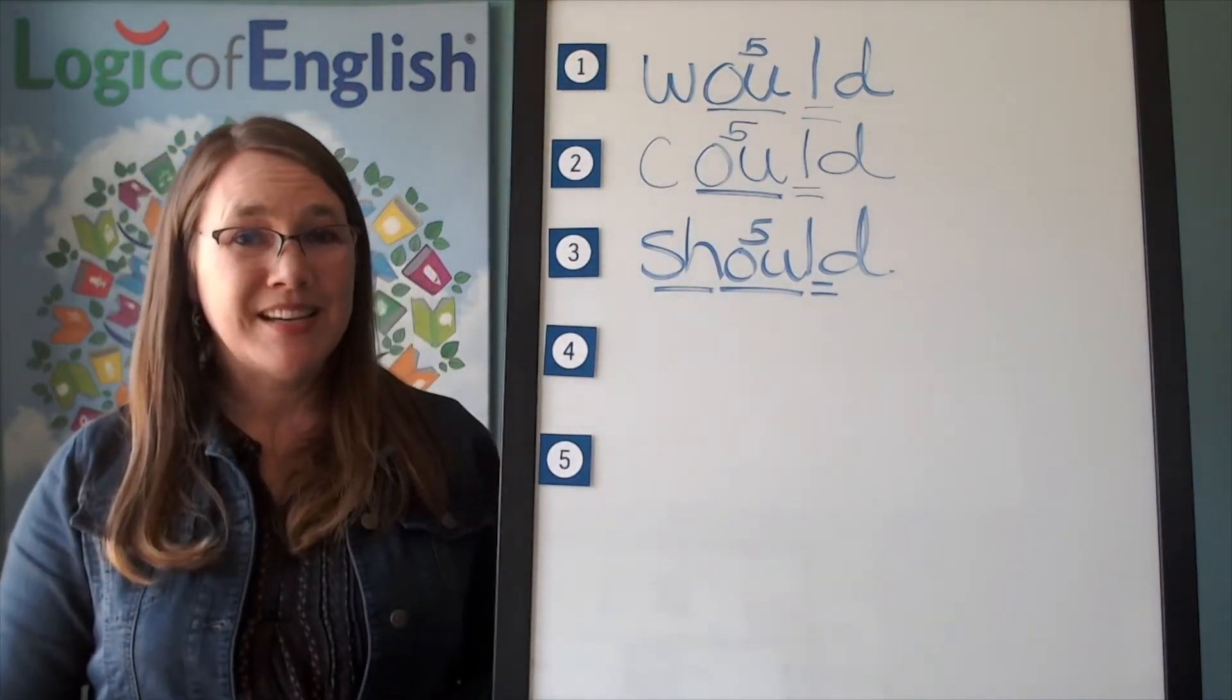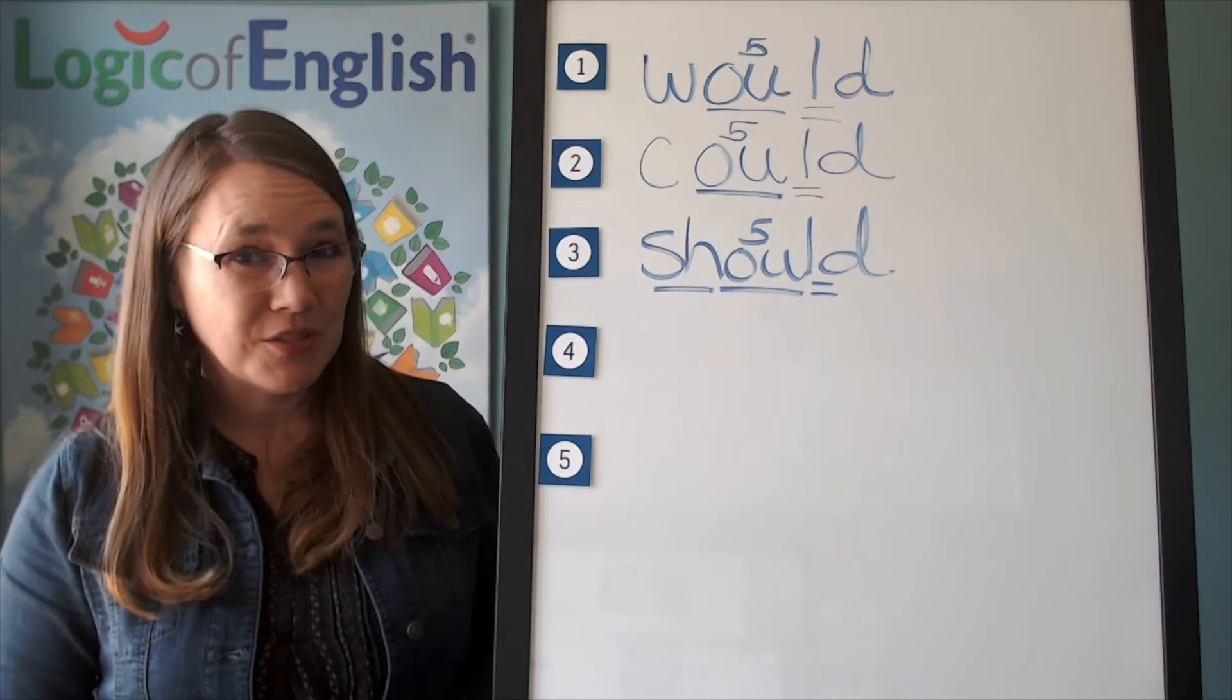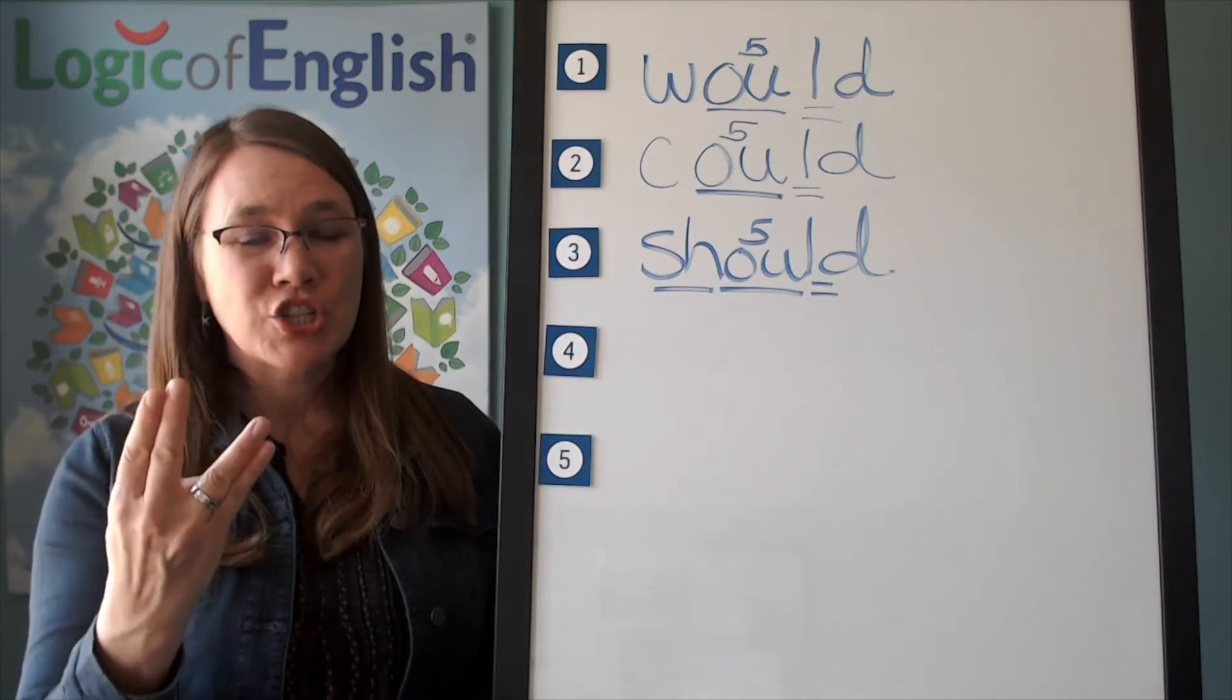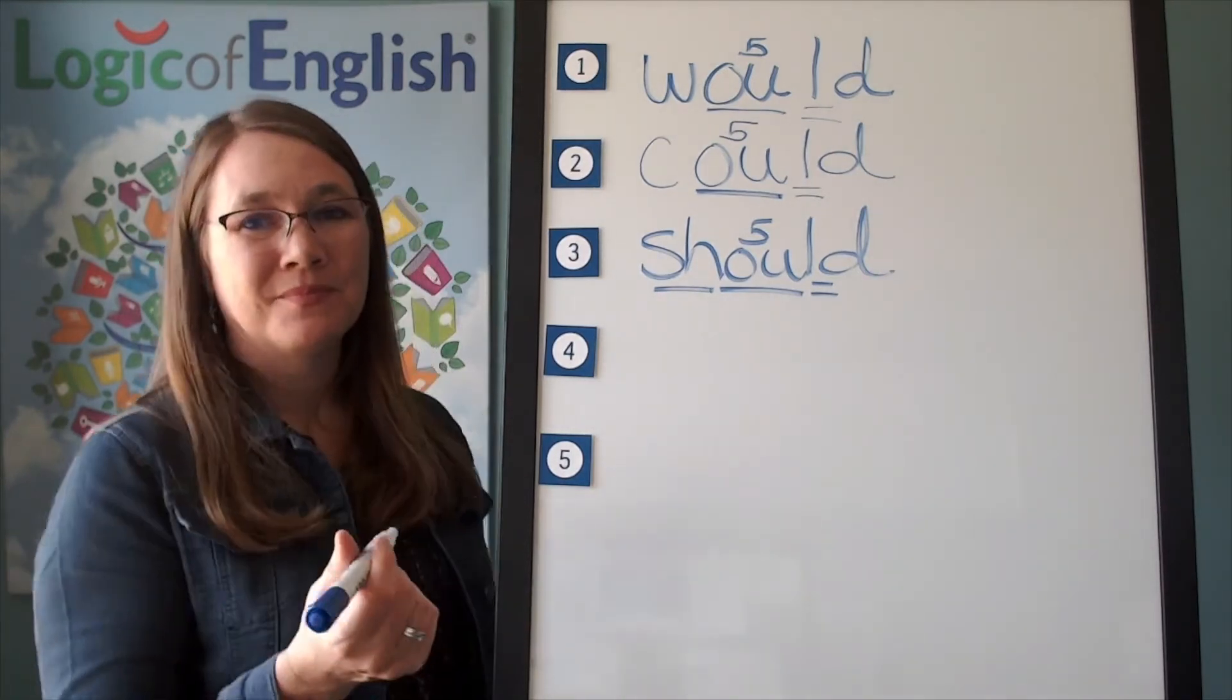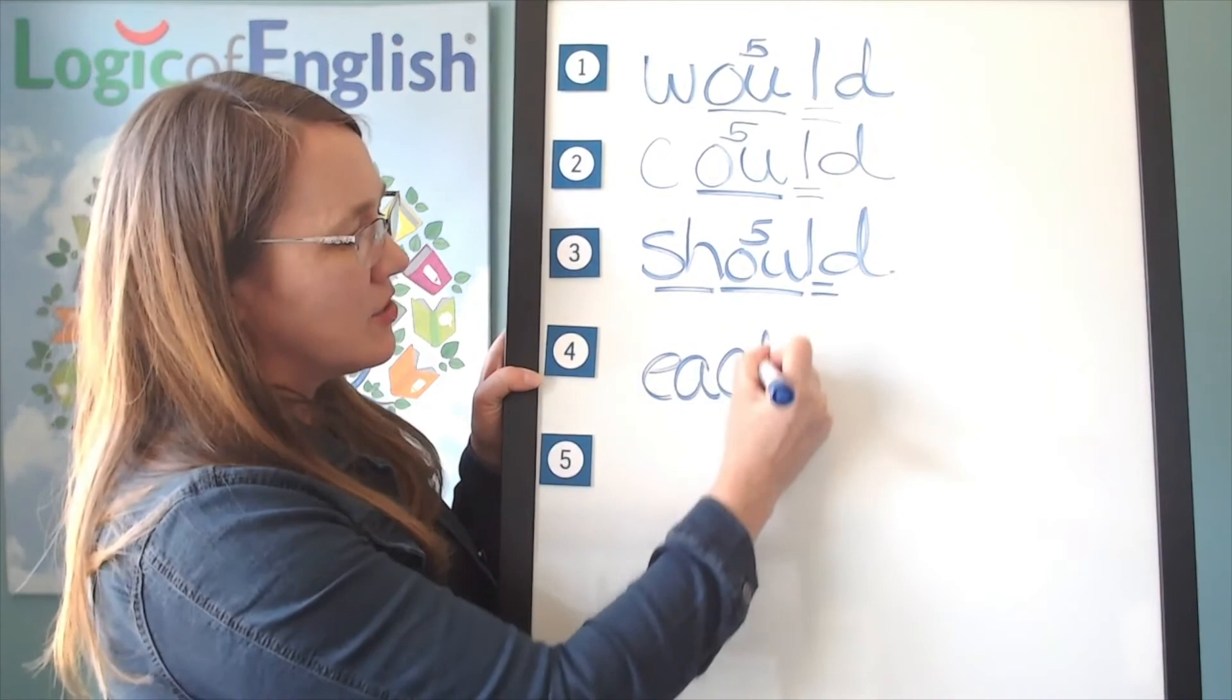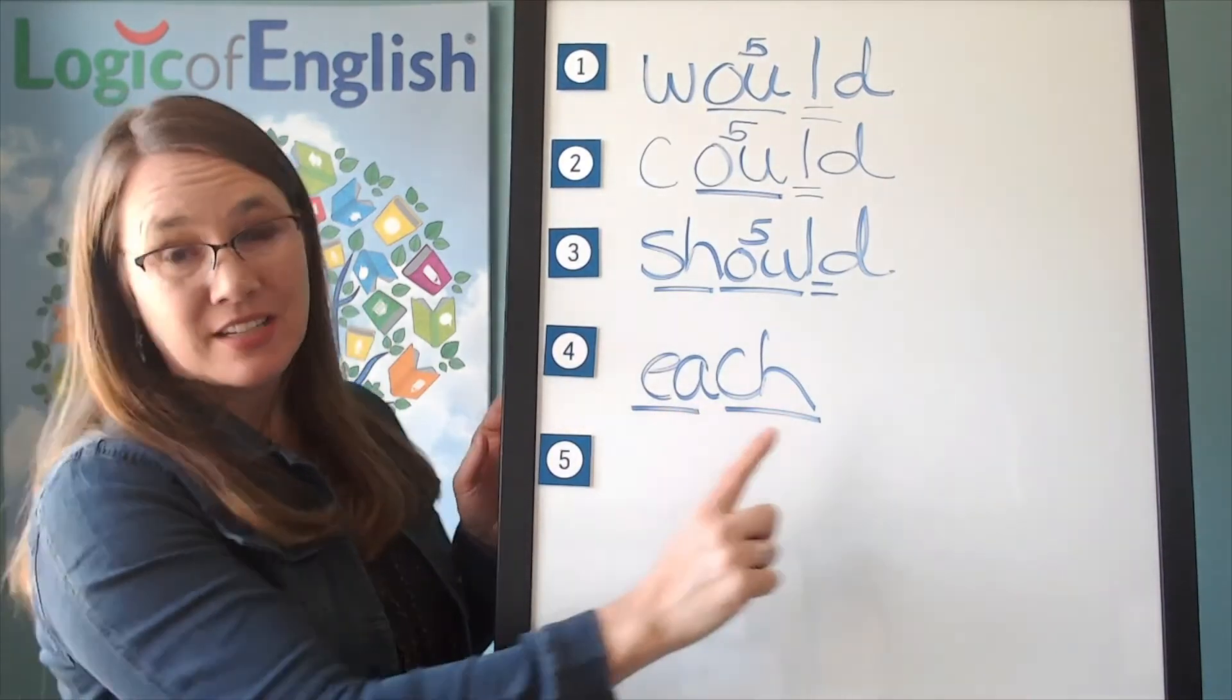The next word is each. Each of you are doing a great job or I would like to give one to each of you. Each. Let's sound it out. Each. E. Use an e at a. Ch. Got it? Go ahead and write it. Now, help me write it. Each. E. Ch. How will we mark it? Well, underline the e and the ch. Let's read it. Each. Each. Each.